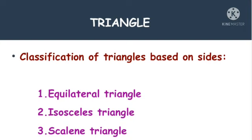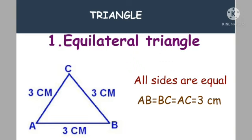The first one is the equilateral triangle. In this, all the sides are equal in length. If you see this triangle: AB is equal to 3 centimetres, BC is equal to 3 centimetres, and AC is equal to 3 centimetres. So all sides are equal, and it is called an equilateral triangle.